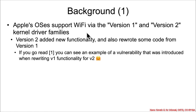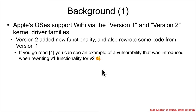I'll show some names in a second. It's worth noting that version 2 added new functionality, which of course means new attack surfaces, but they also rewrote some code from version 1. If you go read the citation for this vulnerability, you will see an example of an out-of-bounds write vulnerability in kernel space that was reintroduced when rewriting v1 functionality for v2.